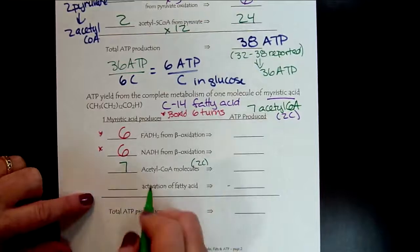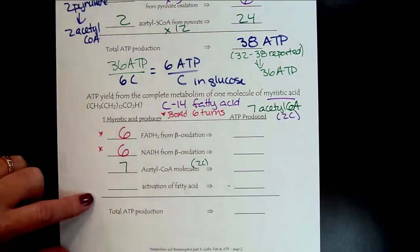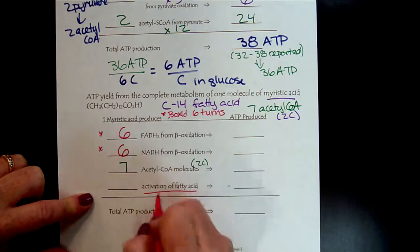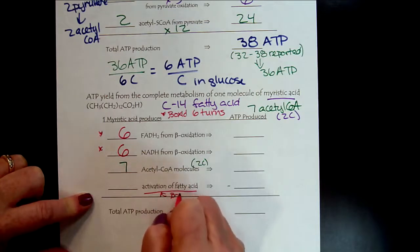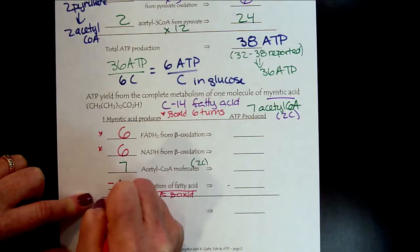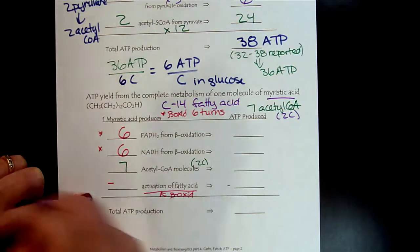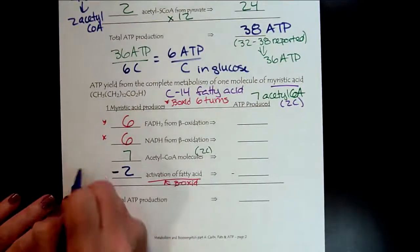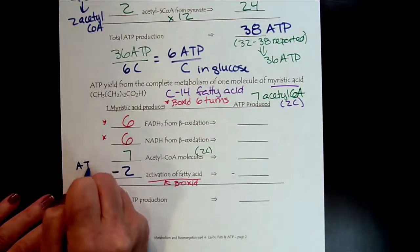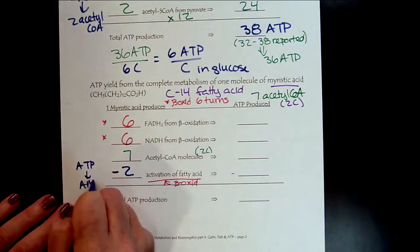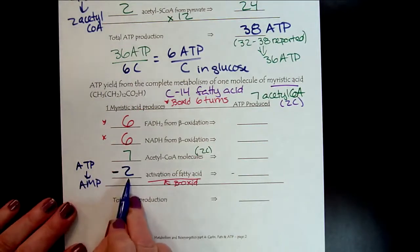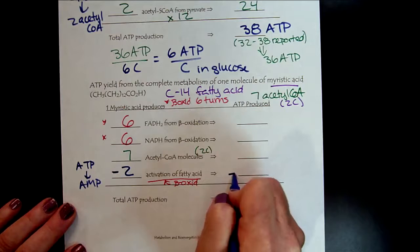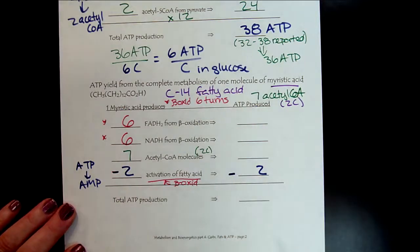However, at the beginning, to initiate beta-oxidation, activation of the beta-oxidation actually consumes, let me use a different color here, it consumes two ATP. Because we take an ATP goes to AMP, so we count that as a two. So that's why we have a minus here, minus two.